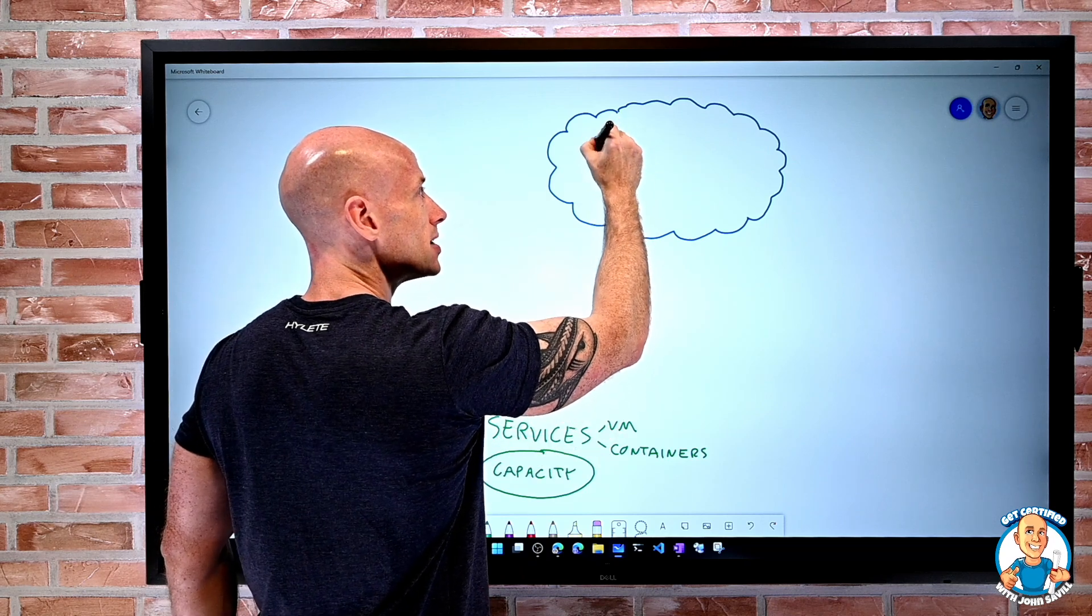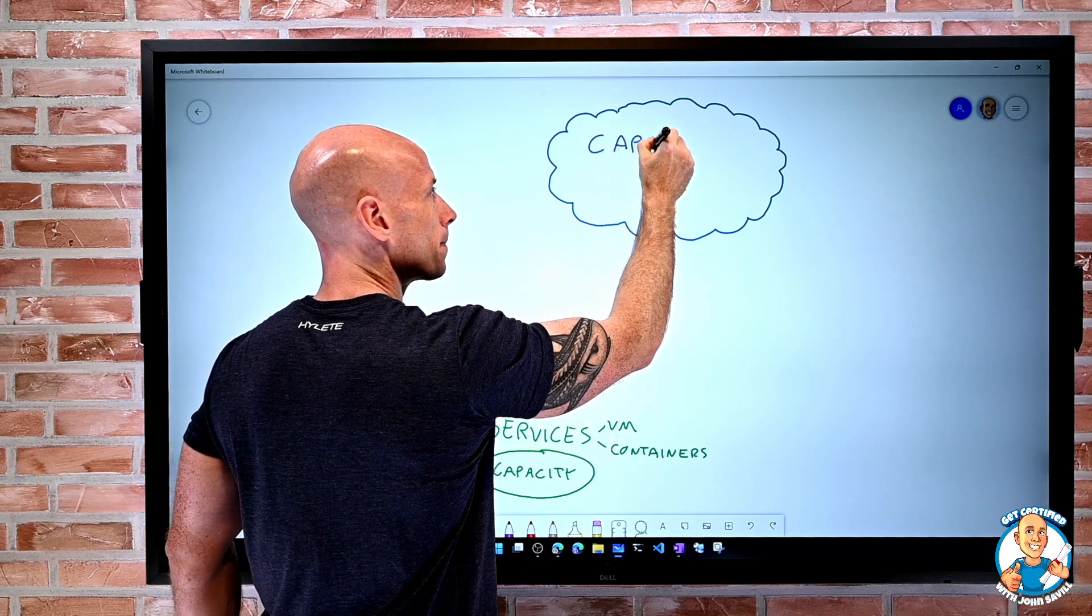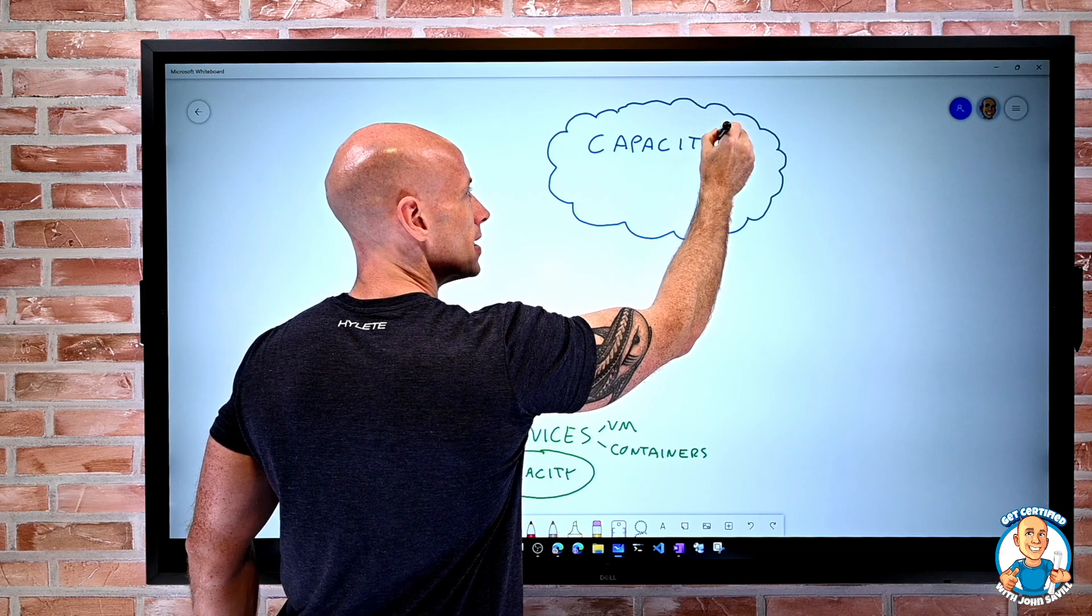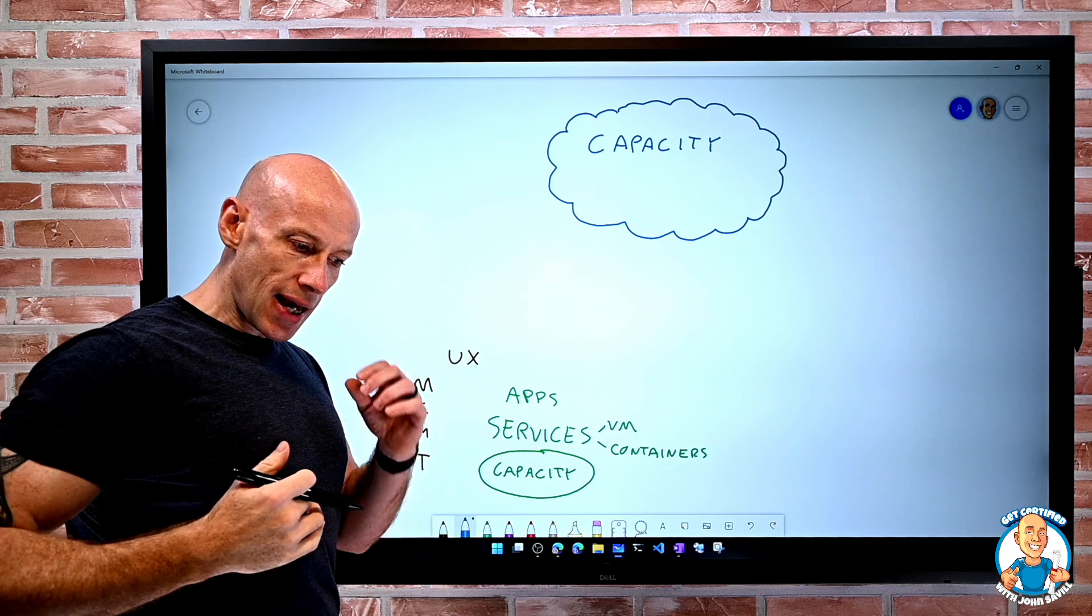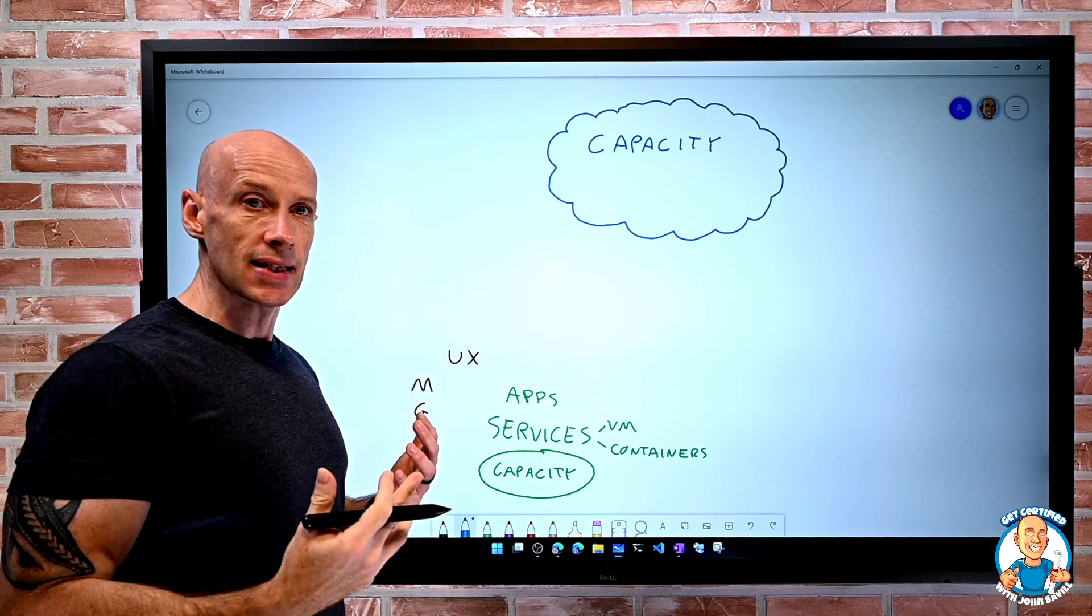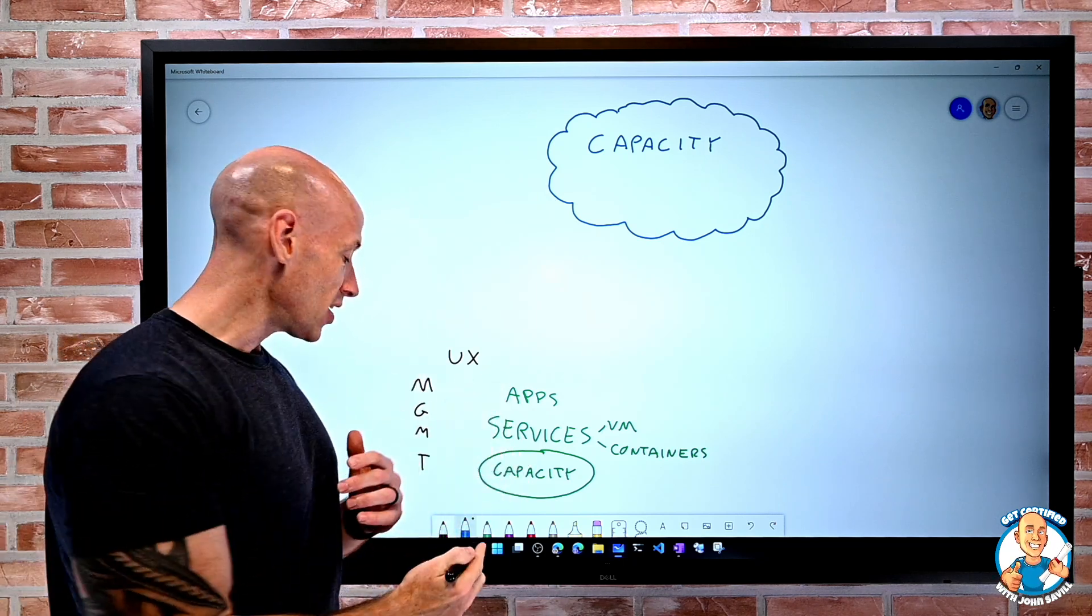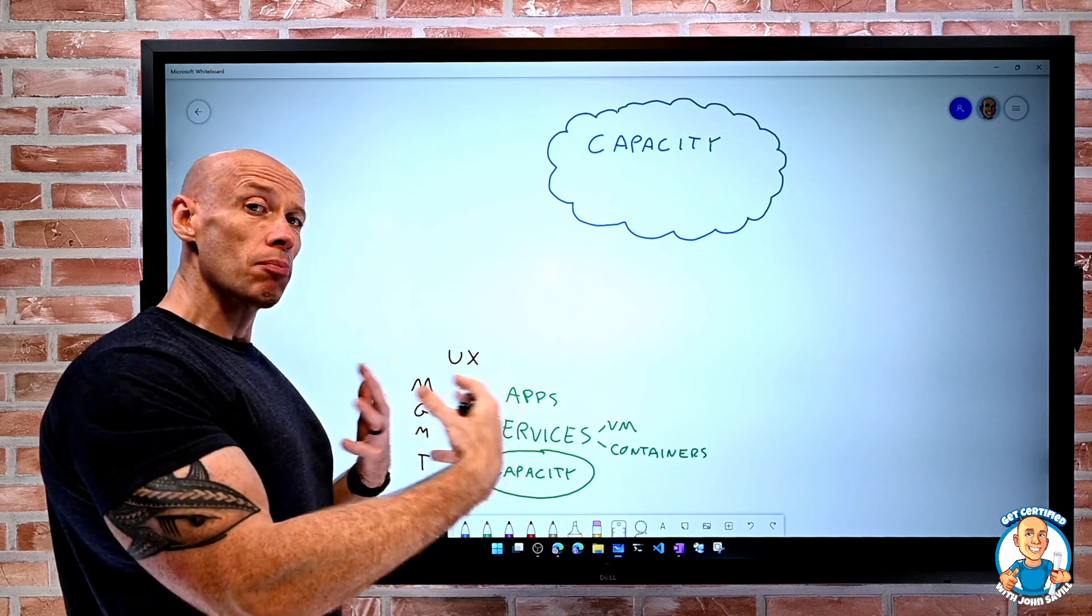So once again, there's this huge amount of capacity available in our cloud service. Once again, just like on-premises, that capacity is housed in data centers. There's no real magic. There are building blocks in the cloud.